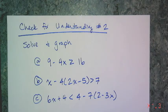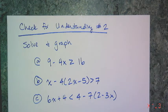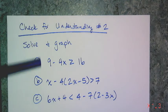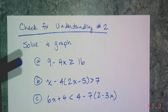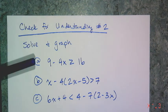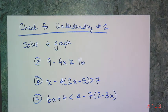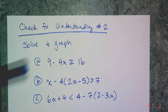For your second check for understanding, I want you to solve and graph these three inequalities. You can write your solution set in either set notation or interval notation — either way, solve all three. Remember the one difference between the properties of equality and the properties of order is multiplication or division by a negative number — remember to switch those directions.